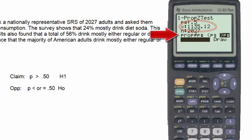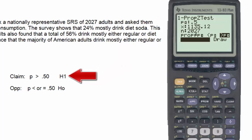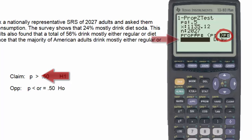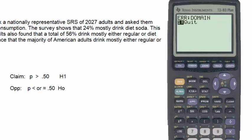In deciding the inequality sign, we look at the alternative hypothesis. Since the inequality sign is greater than, we select greater than from the three choices. However, when we click calculate, we see an error statement telling us something is wrong with the domain. The domain is the input. Selecting enter or the number one brings us back to the home screen.